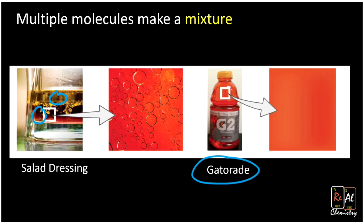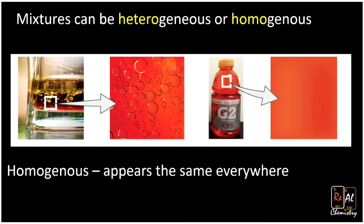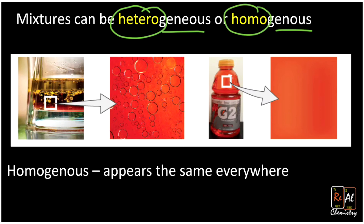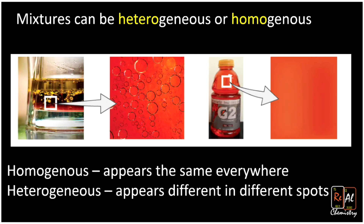You might notice these two mixtures look different. The salad dressing on the left looks different depending on where you look — mostly vinegar at the bottom, mostly oil at the top, and a mix in between. Gatorade, on the other hand, looks the same everywhere. Mixtures can either be heterogeneous or homogeneous. The prefix 'hetero' means different throughout, while 'homo' means the same throughout. Homogeneous means it appears the same everywhere, like Gatorade — the same at the top, bottom, and middle. The olive oil and vinegar salad dressing is heterogeneous.